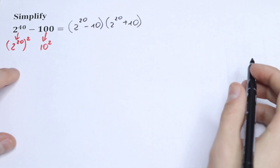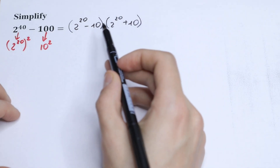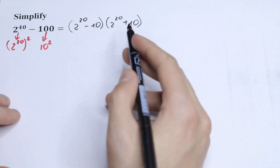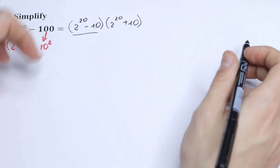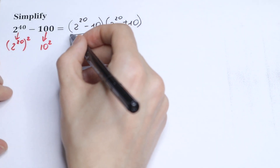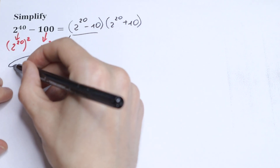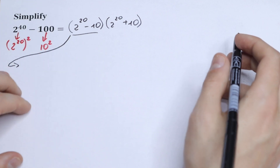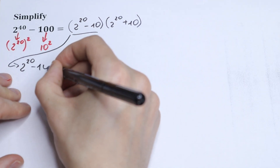We have a product of two parentheses. If we find one parenthesis, we will easily find the second — just add 20. But let's simplify. Let's find the first parenthesis: 2 to the 20th power minus 10.